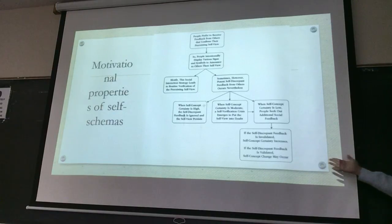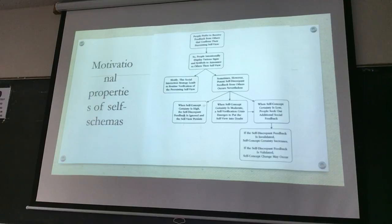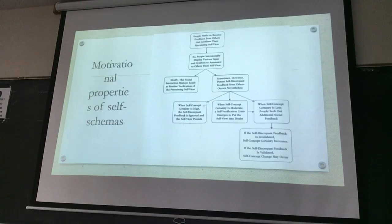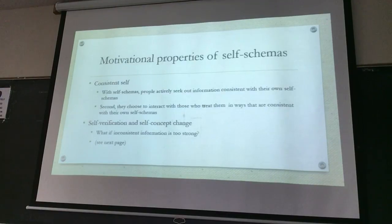Through the self-verification crisis, you may change your self-concept if the inconsistent information is too strong. Actually, this is also a strategy to reduce cognitive dissonance — because you cannot change the information, you change your own self-concept so the dissonance can be reduced. That's how the self-concept can act as a motive.